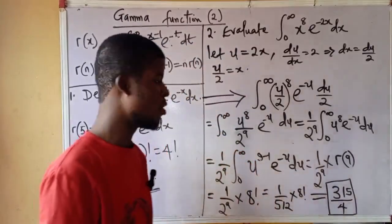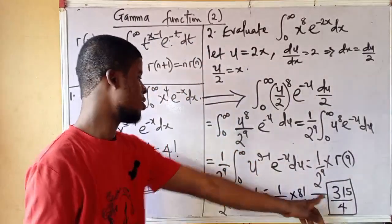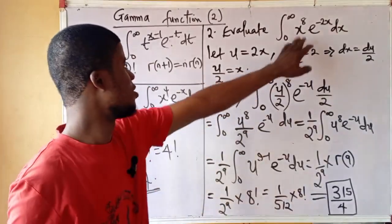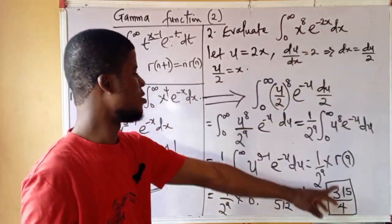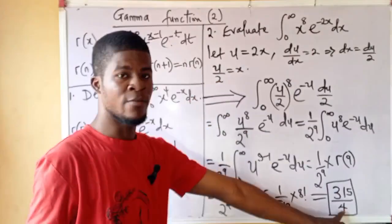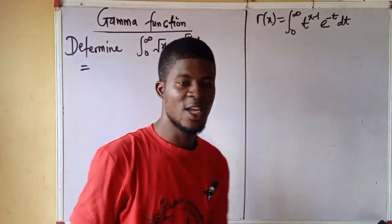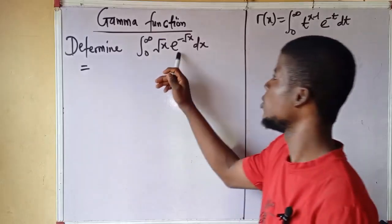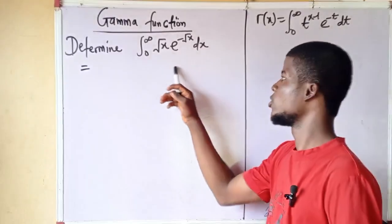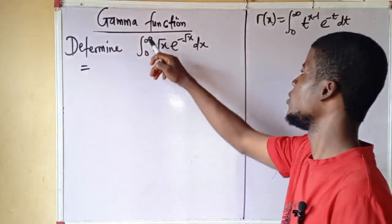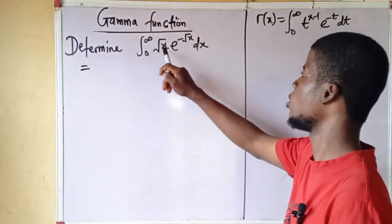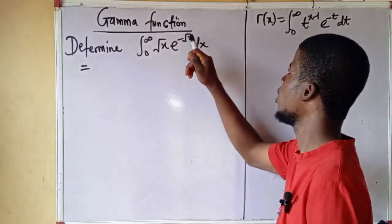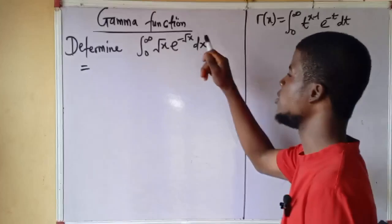You can punch it into a calculator to verify. For this particular integral, the answer is 315 divided by 4. Now, still using the gamma function, let's find the value of the integral from 0 to infinity of the square root of x times e to the power of minus root x, dx.